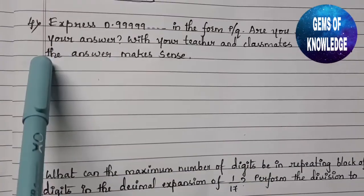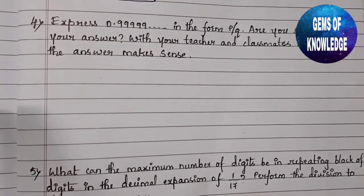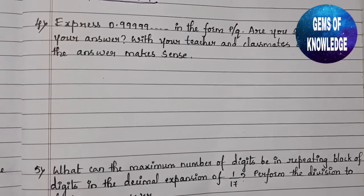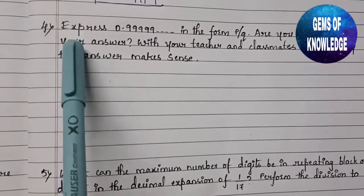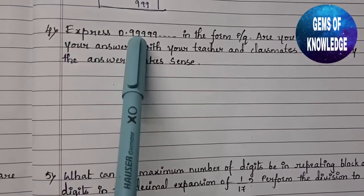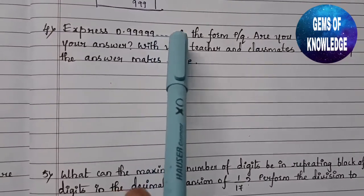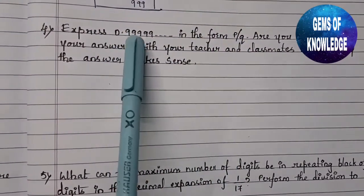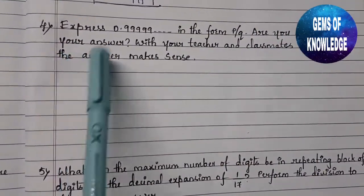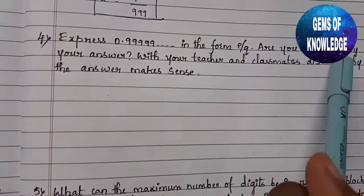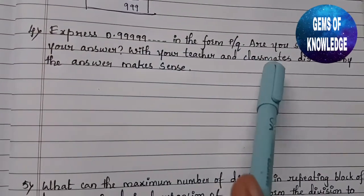Before starting, make sure to subscribe to my channel and click the bell button to get notifications as soon as I post new videos. The fourth question is: express 0.99999... in the form of p by q. Are you surprised by your answer? After getting the answer, we have to identify whether we are surprised and discuss with your teacher and classmates why the answer makes sense.